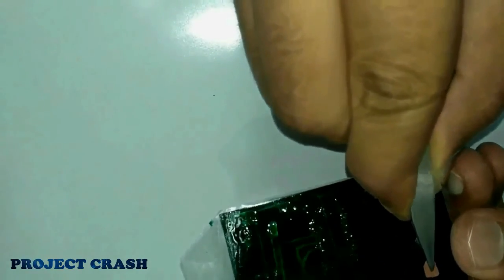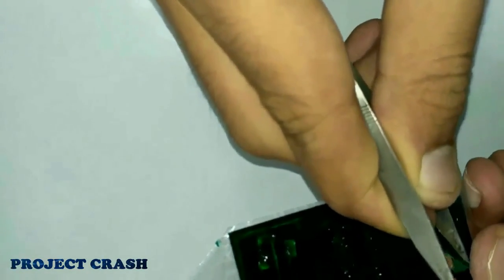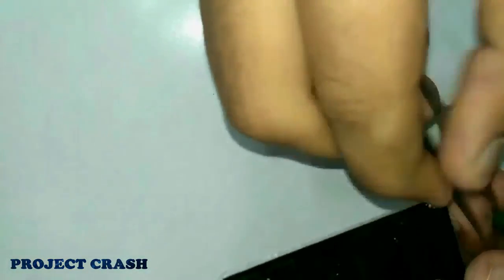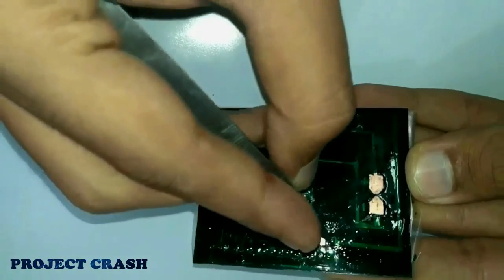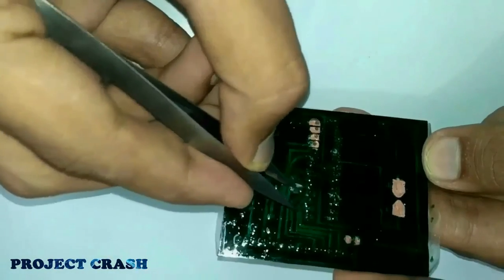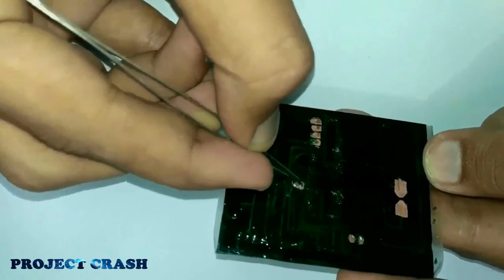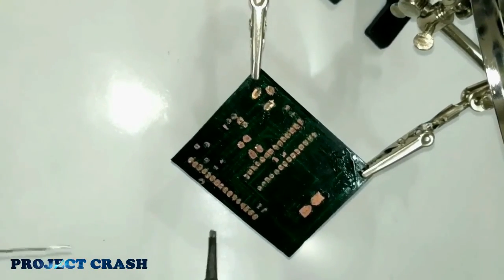When the varnish dried up, I remove the dried glue with my tweezer. And the PCB is ready for soldering.